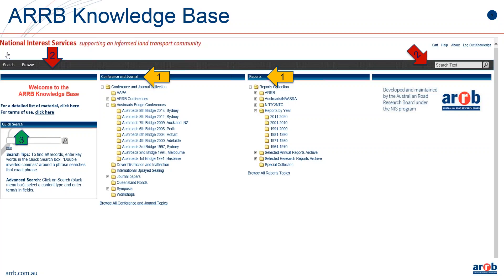Looking at the centre of the page at the two arrows marked one, content is organised in two collections called Conference and Journal, and Reports. Folder names are indicative of the kind of content included — for example, the ARB conferences — and in the same way that you might browse through folders on a network drive, these folders may be browsed by clicking on a folder to open. The red arrow under the National Interest Services banner shows the black menu bar with search and browse options on the left and a search text box on the right. This menu bar is on every web page so you can search or browse from wherever you may be in the database.